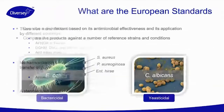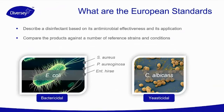What are the European standards? They describe a disinfectant based on its antimicrobial effectiveness and application. The product is compared against a number of reference strains and conditions. For a bactericidal claim, you need to test against reference bacteria such as E. coli, Staphylococcus aureus, Pseudomonas aeruginosa, and Enterococcus. These four reference bacteria have been selected because they are the hardest to kill by disinfectant. For a yeasticidal claim, the reference yeast is Candida albicans, which must be tested to claim yeasticidal activity.